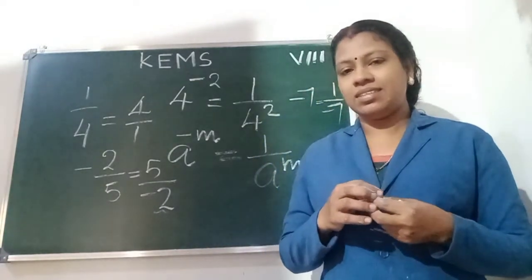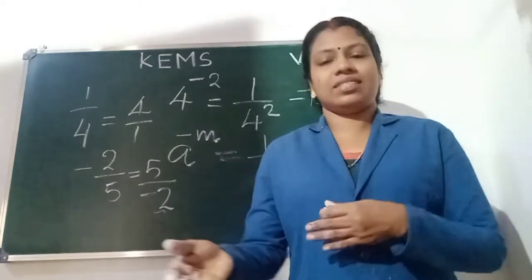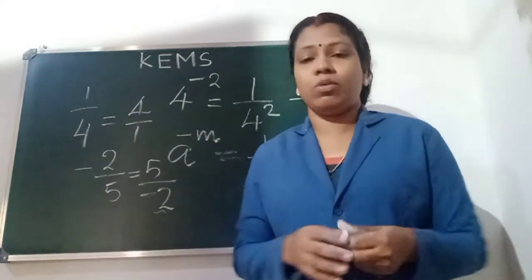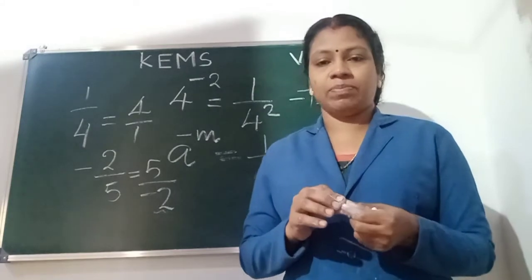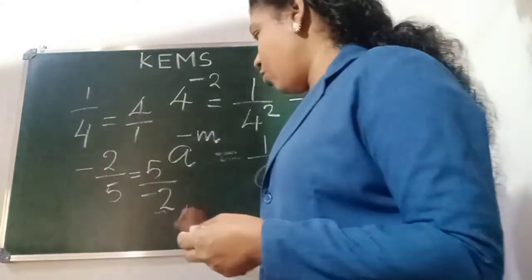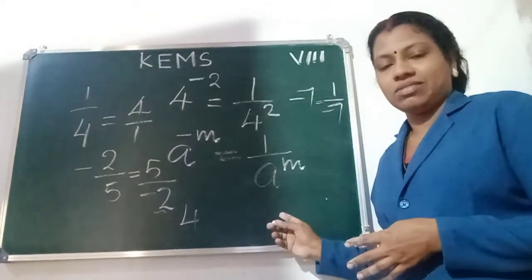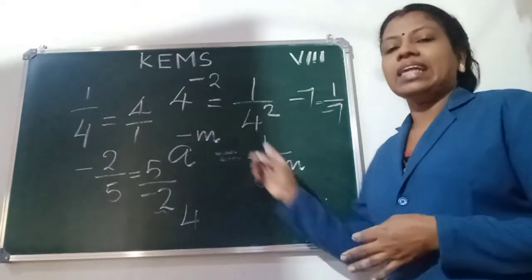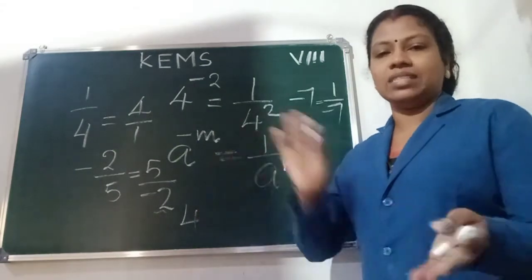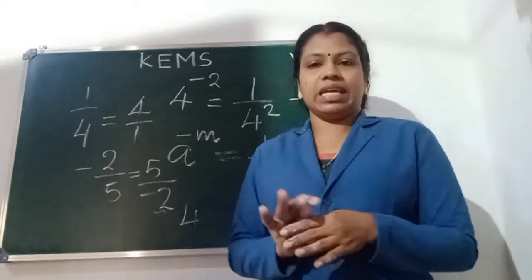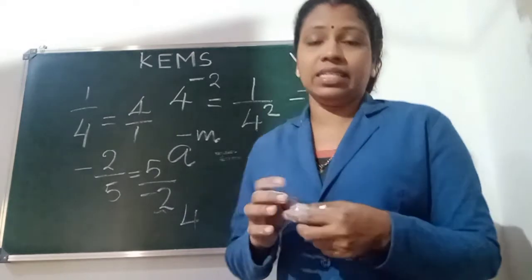What is additive inverse? Additive inverse means the same number with the opposite sign. Additive inverse of plus 4 is minus 4. Additive inverse of minus 3 is plus 3 — just opposite sign with the same number.